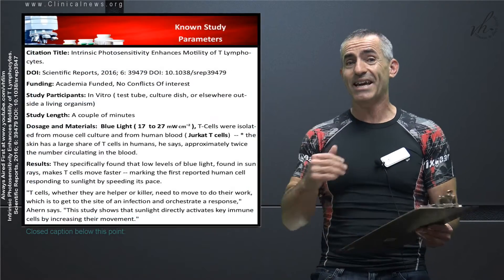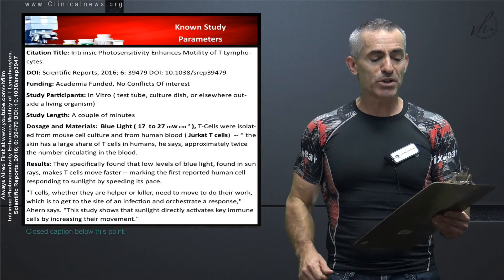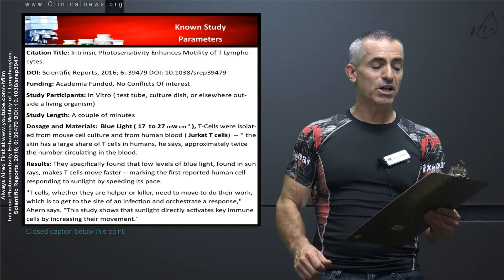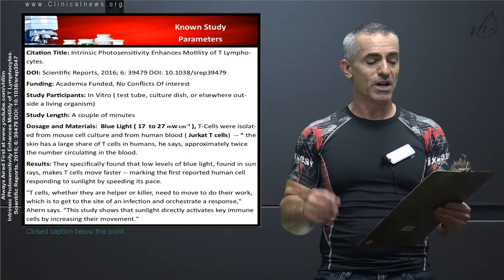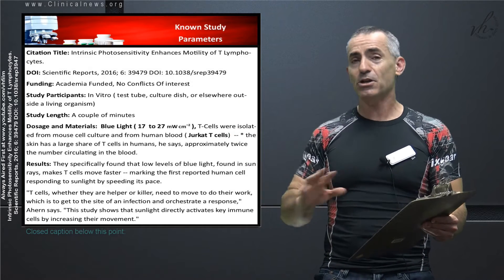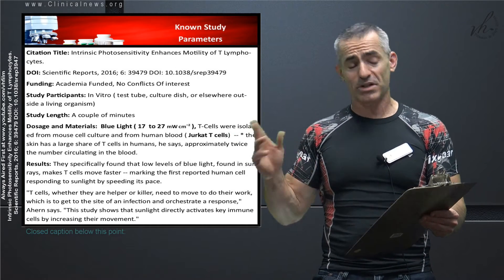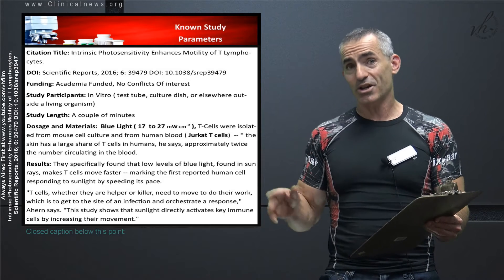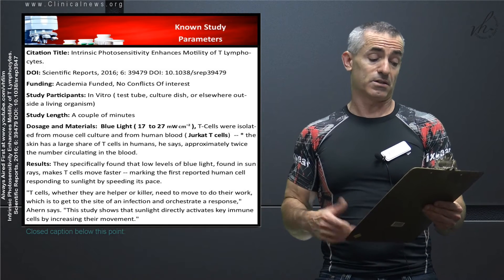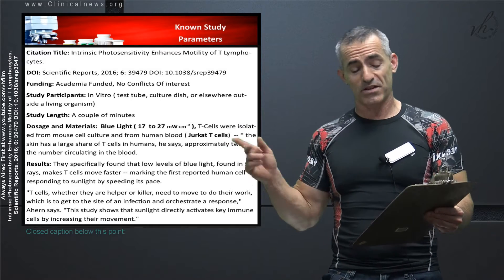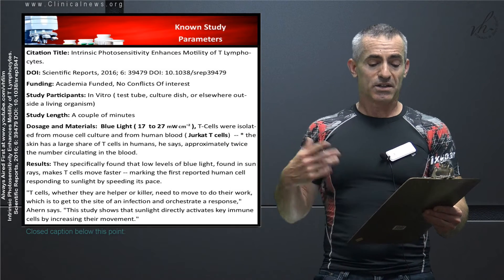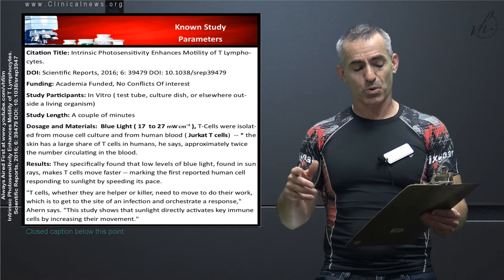Let's go right into the study parameters. Citation title is as follows: Intrinsic Photosensitivity Enhances Motility of T Lymphocytes, DOI citation is as follows. Funding: academia, basically no conflict of interest. Study participants: it was in vitro study, took a couple of minutes as you can see, they are basically just a minute or two. Dosage of materials: blue light and those are wave spectrums as basically shown. The T cells, the human T cells were basically taken.